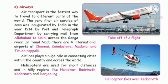Q4: The oldest mode of transport is — A: boat, B: cycle, C: walking, D: bullock cart. Answer: Option D, bullock cart. Q5: There are how many modes of transport? A: three, B: four, C: five, D: six. Answer: Option B, four.